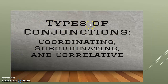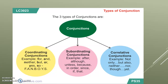So the three types of conjunctions are: coordinating, subordinating, and correlative. For coordinating conjunctions, the words we use are: for, and, neither, but, or, yet, so. Taking the first letter of each, we get the word FANBOYS — F-A-N-B-O-Y-S. Subordinating conjunctions include: after, although, unless, because, in order, since, if, and that.